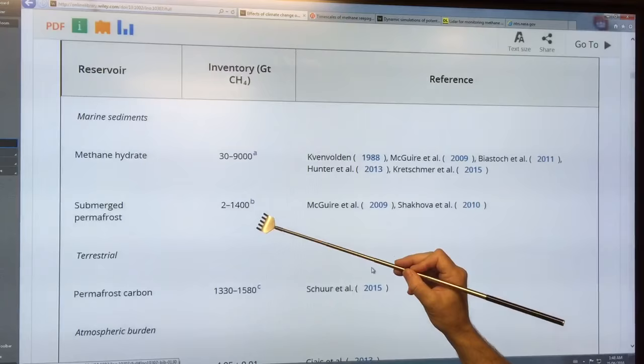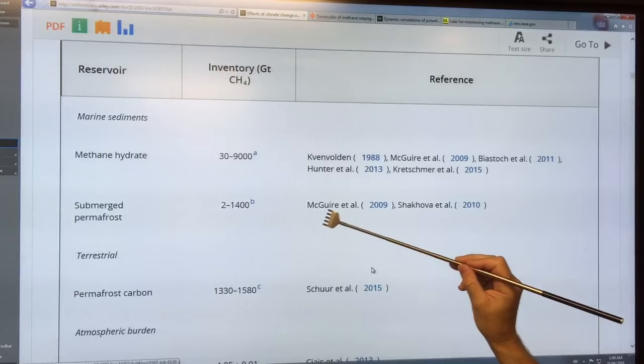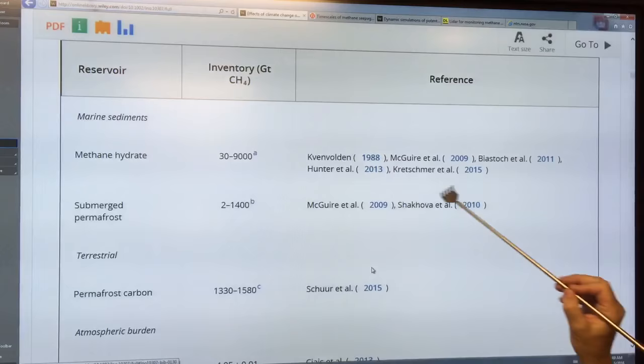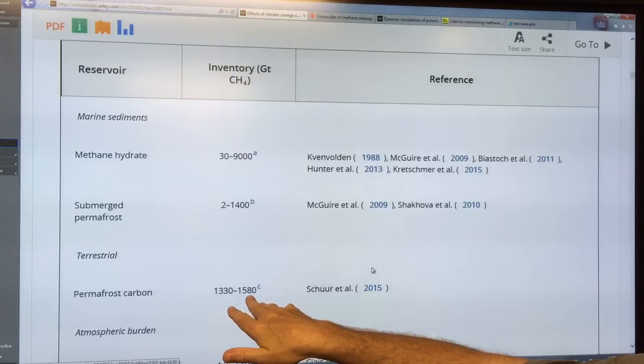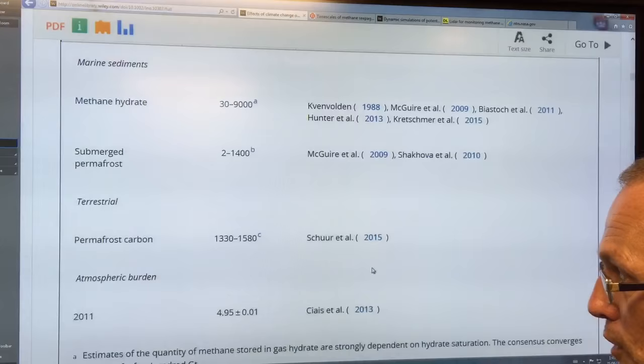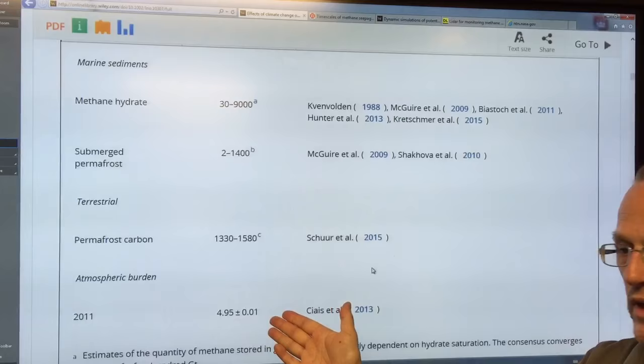Submerged permafrost, 2 to 1400 gigatons. 2 according to the Maguire paper, 1400 just on the Eastern Siberian Arctic shelf alone, according to Shakova. I believe the Russian numbers, they've been studying on that shelf for 30 years, so 1400. Terrestrial, the range is tighter, 1330 to 1580 gigatons of methane. So lots on the terrestrial permafrost. The atmospheric burden in 2011 was only 4.95 gigatons. Keep that in mind.